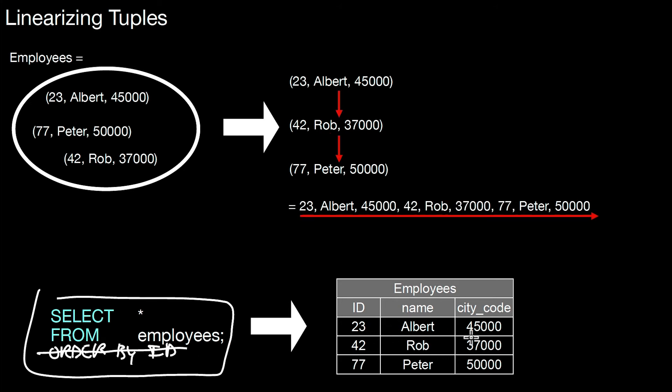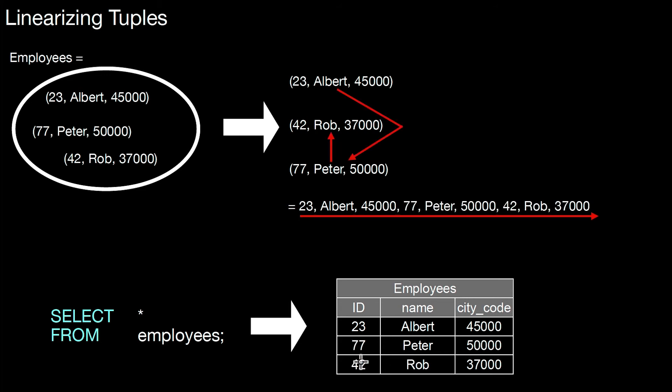If you go back to the previous example, here it was first this tuple, 23, then 42, 77. Now it's 77, 42. Now here we see a different order.